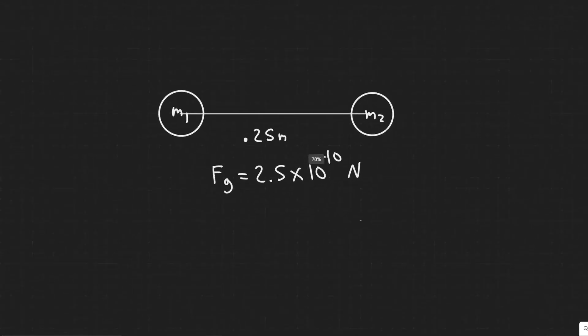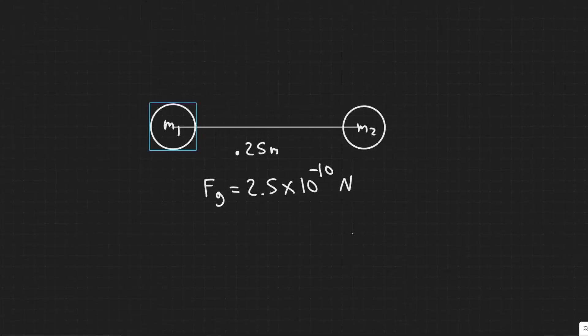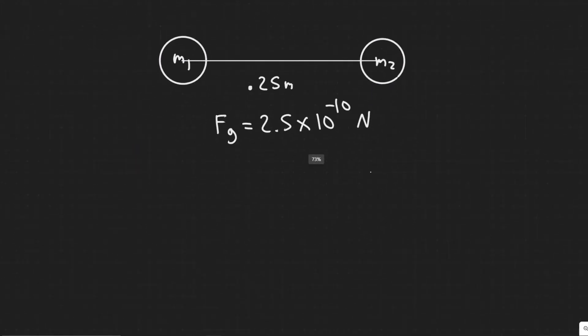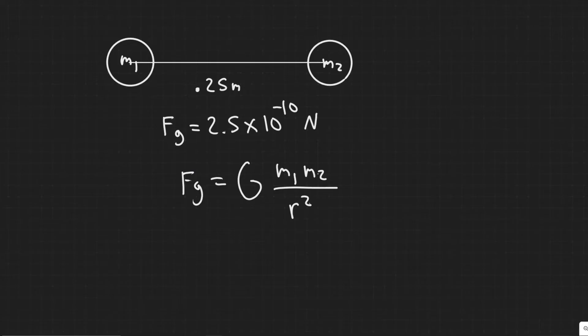So the first thing you need to know is the formula for the force due to gravity that these two objects are going to experience. It's going to be F_g is equal to G the gravitational constant m1 times m2 divided by the radius squared.